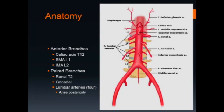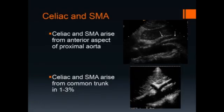It has multiple paired branches, of which the most significant are the renal arteries at T2, the gonadal arteries, and there are four paired lumbar arteries. These are the gonadal arteries. The celiac artery and the SMA arise from the anterior aspect of the proximal aorta. This is the celiac axis and this is the SMA.